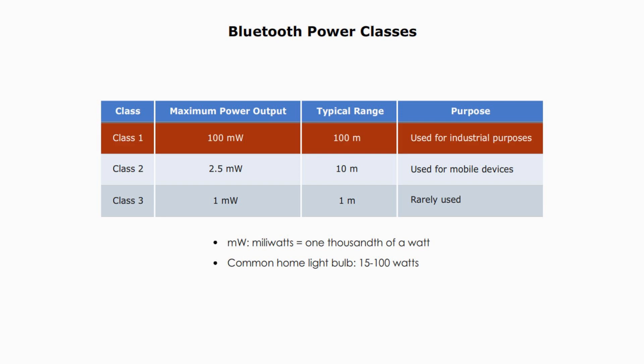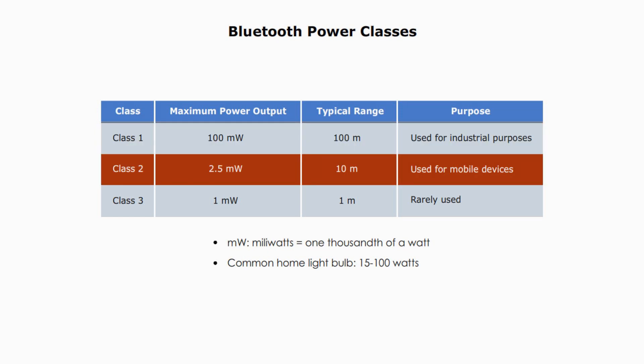Class 1 maximum power output is 100 mW. 1 mW is one-thousandth of a watt — a common home light bulb is between 15 to 100 watts, so mW is very, very low in power. The range of Class 1 Bluetooth is about 100 meters, or more than about 300 feet, and it is used in industrial areas. Class 2 Bluetooth's power output is 2.5 mW, with a range of about 10 meters, or about 33 feet. Class 2 is used for mobile devices, and most consumer devices use Class 2 Bluetooth.